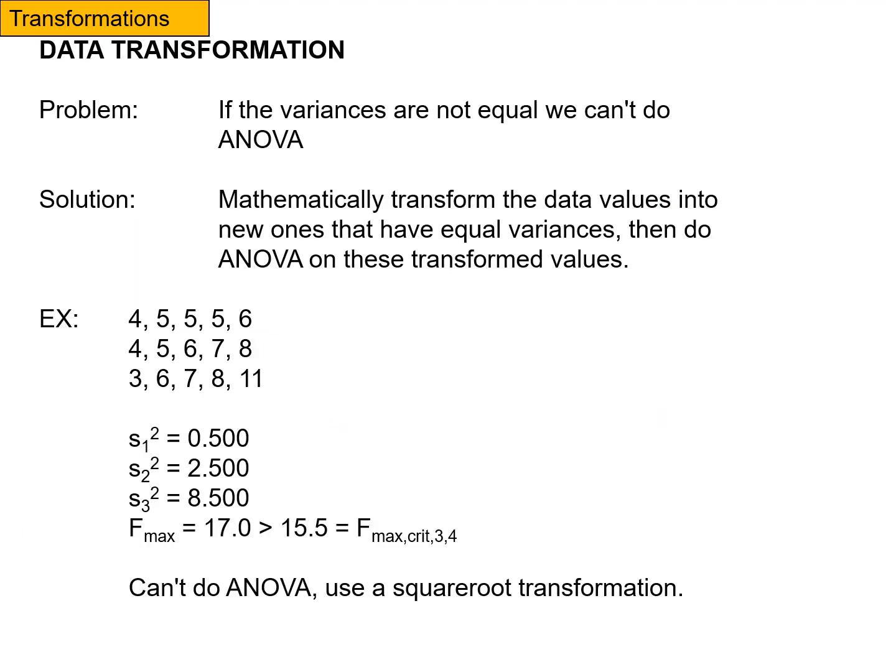Here's an example. So let's think about our problem. If the variances are not equal, we can't do an ANOVA, which would be a problem. What would our solution be? To mathematically transform the values into new ones that have equal variances.